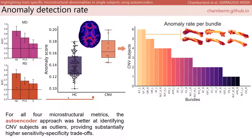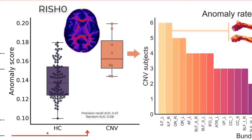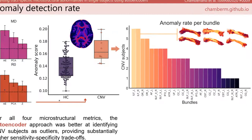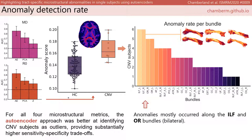In particular, all of the CNV subjects had an anomaly score larger than the mean of the typically developing children, and 50% of them were larger than the 95th percentile of that population. A closer look into the anomaly scores showed that most of them occurred along the inferior longitudinal fasciculus and the optic radiation bundles, both bilateral, which are two association bundles that run into the temporal lobe.